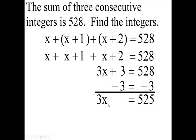When you divide by the coefficient of the variable, what's the variable? x is the variable, and its coefficient is three. We divide by three. We get x is 175. The next one, 176. The next one, 177.